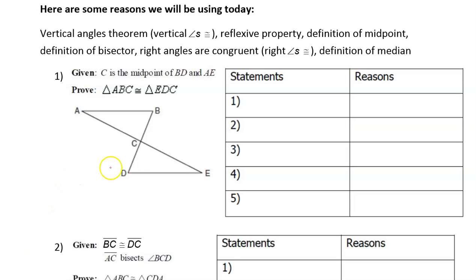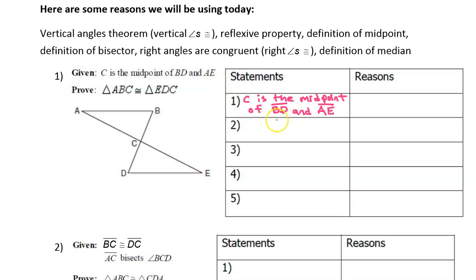In this video I will show you how to do some congruent triangle proofs. Look at problem number one. Given C is the midpoint of BD and AE. So first of all let's just write down the given: C is the midpoint of segment BD and segment AE. The reason will be given because that was given, but let's mark that in the picture.